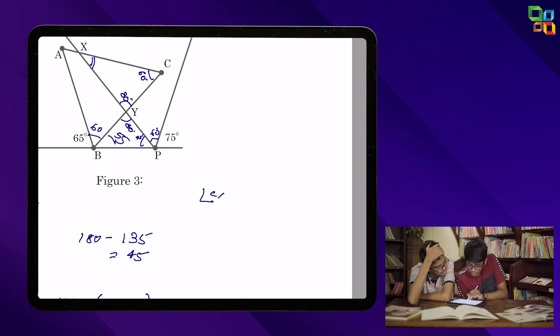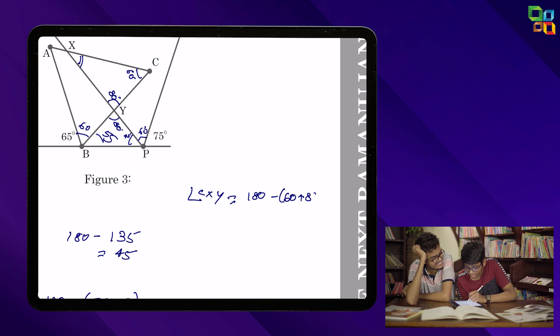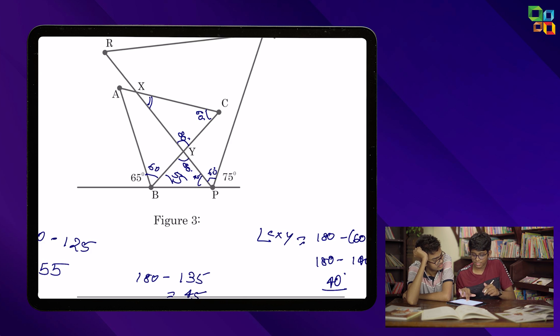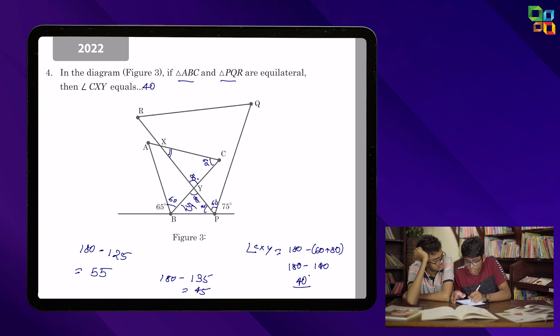So from this we can directly find out what is angle CXY. So angle CXY is equal to 180 minus 60 plus 80, and 60 plus 80 is nothing but 140. So it's 180 minus 140, which is 40 degrees. Final answer. So the final answer is 40 degrees.